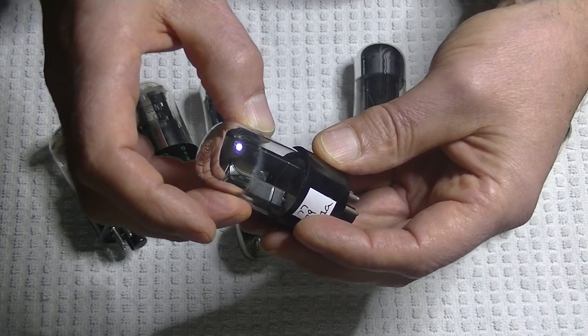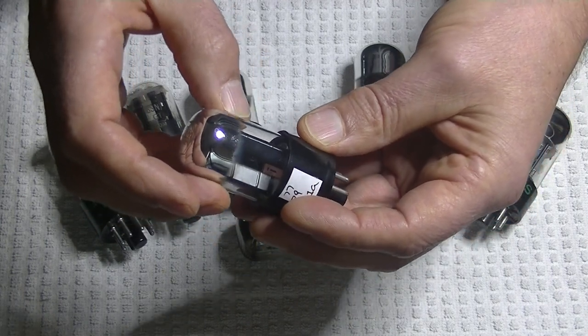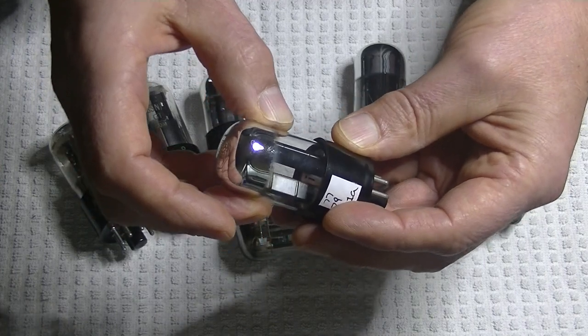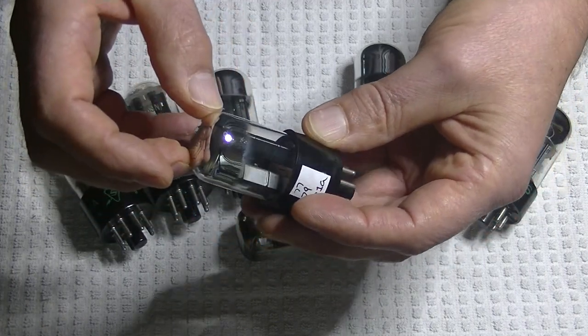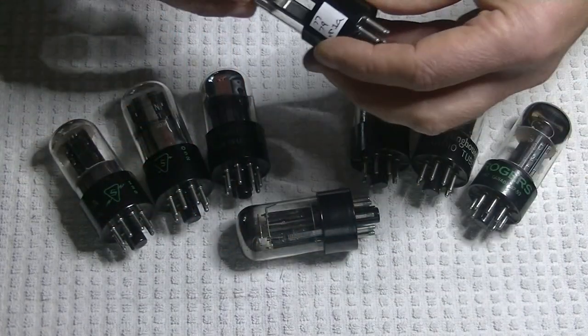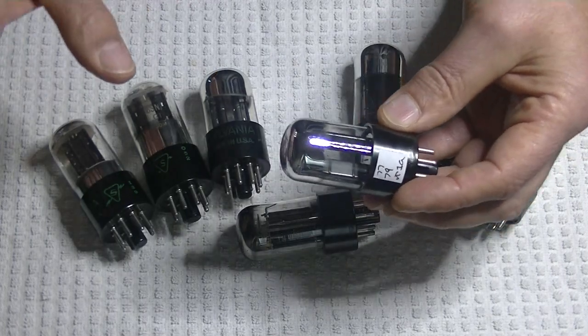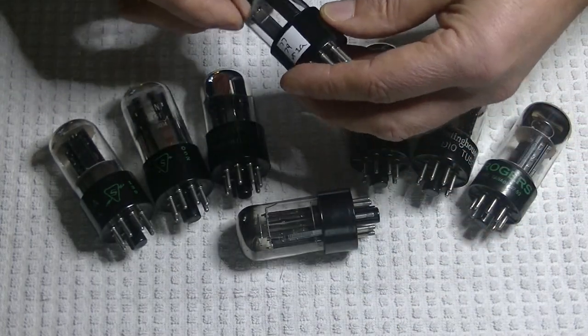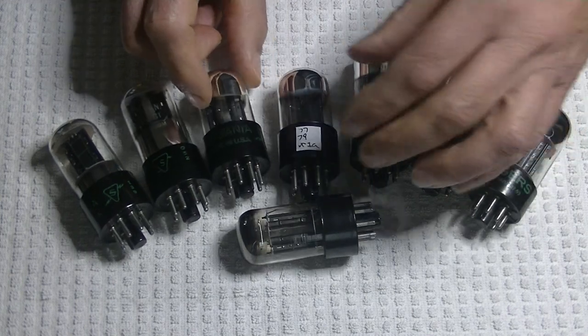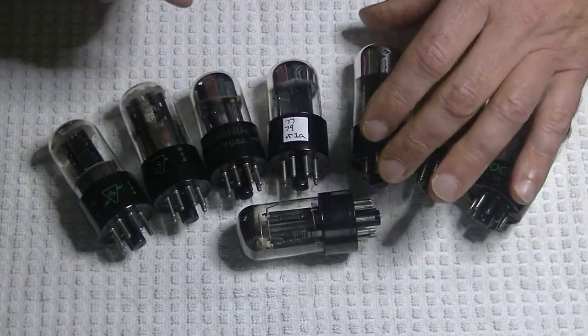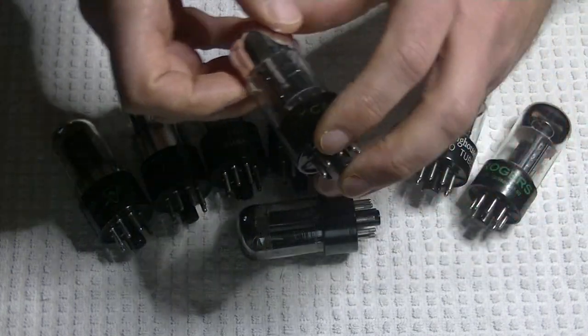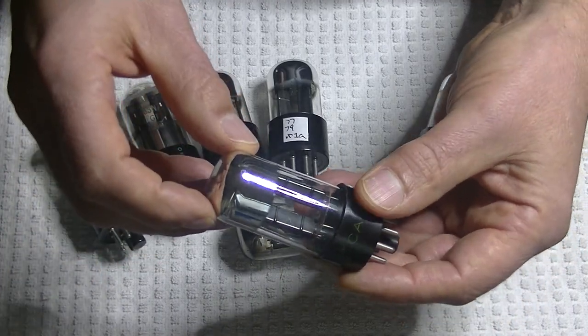And they kept this design right to the end of the tube era. Around the oldest Syvanias I think I've ever seen with a good date code on the box was 1982. I think the plant closed a year or two after that. Syvanias had quite a few plants, actually. But they had a really large one in Pennsylvania at Emporium, I believe. And they all basically closed one after the other.